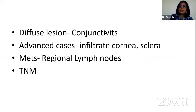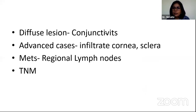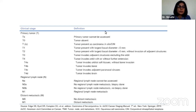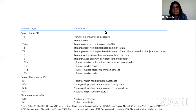The diffuse lesion can look like chronic conjunctivitis. Advanced cases can infiltrate the cornea, sclera, and sometimes even the orbit. It can metastasize to regional lymph nodes, although relatively rare. Hence, we have the TNM classification based on the American Joint Committee on Cancer — Tumor, Node, and Metastasis.